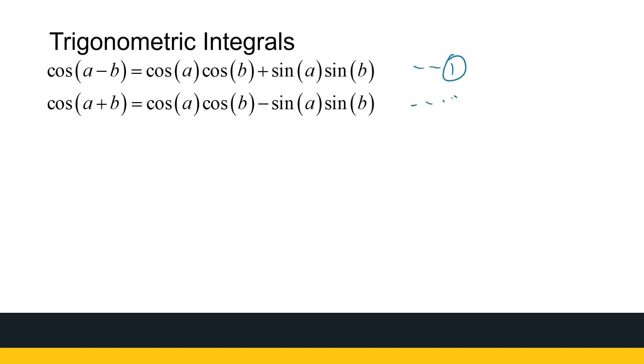If I let that be equation one and equation two, if I add the two equations together, I get cos(a - b) plus cos(a + b) equals two times cos(a)cos(b) plus zero. So we're going to use this, and we can divide by two on both sides.